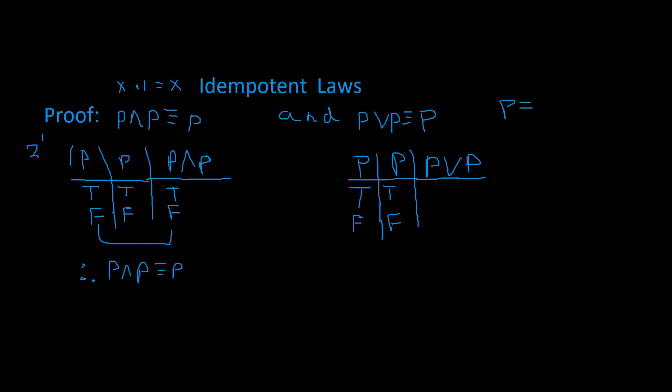P or P is logically equivalent to P. If they're both true, it's going to be true. If one's true, it's going to be true. If they're both false, it's going to be false. And so we have true, true, that's true. Both are false, that's false.